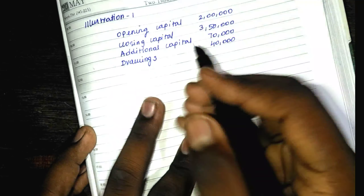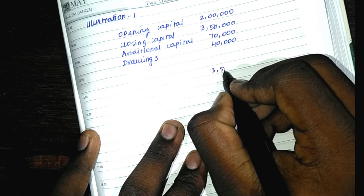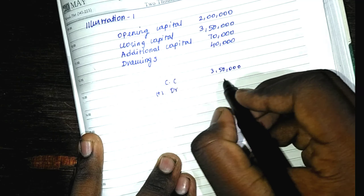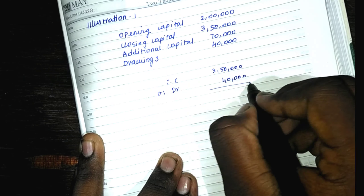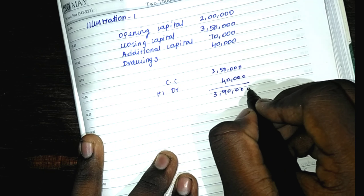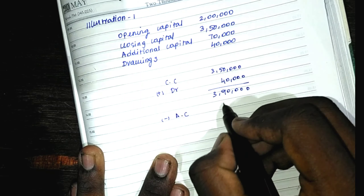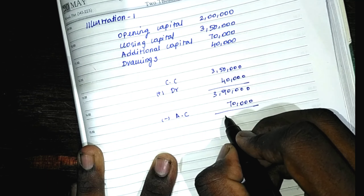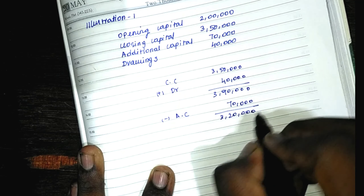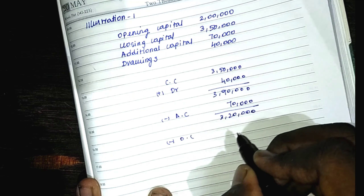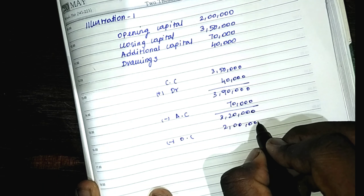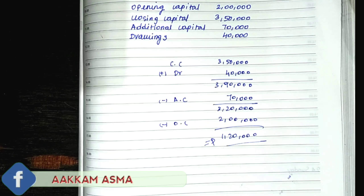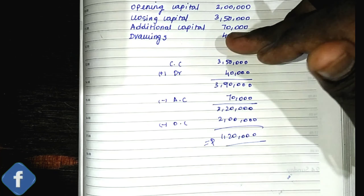So first, closing capital is 3 lakhs. Drawings are plus, so 3 lakhs plus 40,000 equals 3 lakhs 90 thousand. Next, additional capital is minus 70,000, giving 3 lakhs 20 thousand. Then, opening capital is minus 2 lakhs. So 3,20,000 minus 2,00,000 gives us 1 lakh 20 thousand profit.